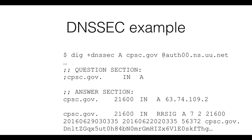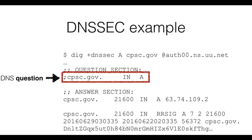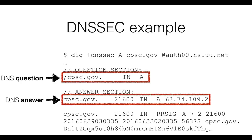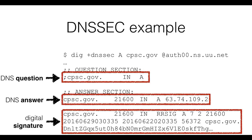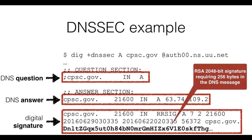This is an example of the use of DNSSEC. On the slide you see DNS information for the cpsc.gov domain. The slide shows the question — in this case we are asking for the IPv4 address of cpsc.gov — the answer to that question, which is the IPv4 address, and the digital signature over the answer. We have removed most of the signature from the example, as it is very large. In this particular case the signature is an RSA 2048-bit signature that requires 256 bytes of space in the DNS message.